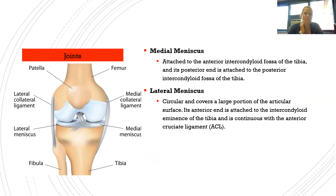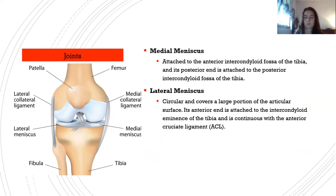The medial meniscus is attached anteriorly and posteriorly to the intercondylar fossa of the tibia. The lateral meniscus is circular, covers a large portion of the articular surface, and its anterior end is attached to the intercondylar eminence of the tibia, continuous with the anterior cruciate ligament. Either or both menisci can be torn, usually due to major compression during rotation while flexing or extending, or during quick directional changes.